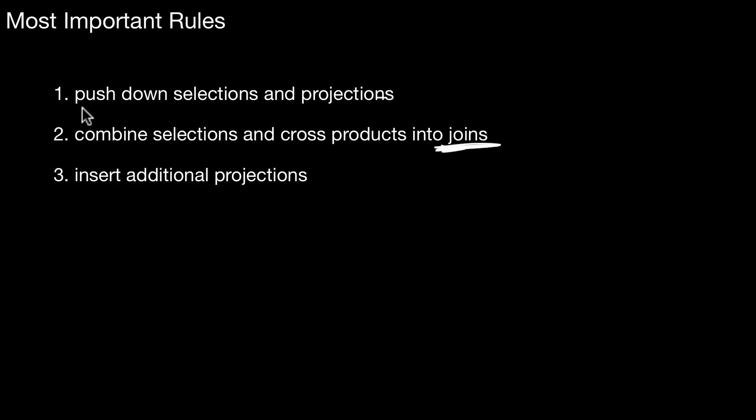There are more problems in query optimization. You can get pretty far with those rules. Database vendors typically do not publish all of their rules, because that is a business advantage. The set of rules and the way how you apply those rules can lead to better performance. Therefore, you can get a better database. You don't want to publish the precise way of how to apply the rules. However, there are more challenges and problems in query optimization that you should be aware of. And one of that is join order.